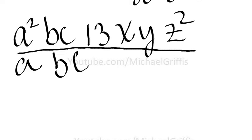We have two a's in the numerator and one in the denominator, so that one in the denominator cancels out. B in the numerator, b in the denominator, they cancel out. C over c, they cancel out.